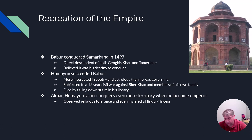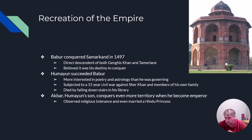The first Mughal is Babur. He conquers Samarkand in the year 1497 and begins to recreate the Empire of Tamerlane. Babur is a direct descendant of both Tamerlane and Genghis Khan, and he believed it was his destiny to control power both politically and militarily. By his death in 1530, Babur controlled all of northern India, as well as parts of modern-day Uzbekistan, Afghanistan, and Pakistan.